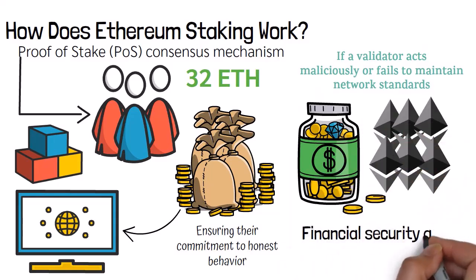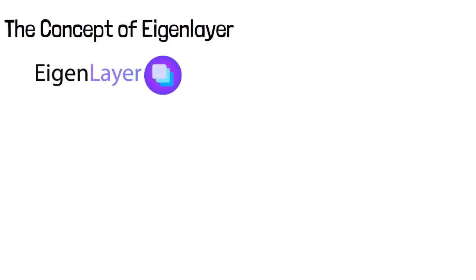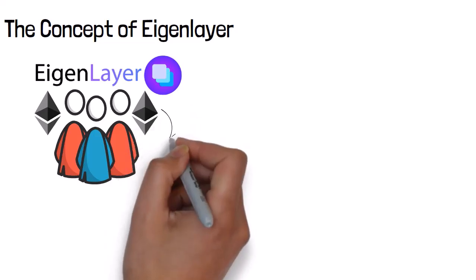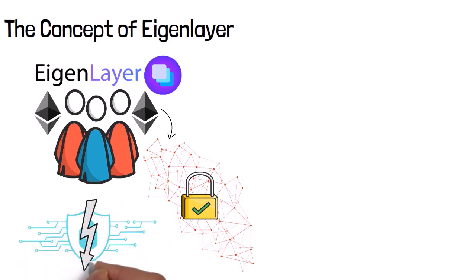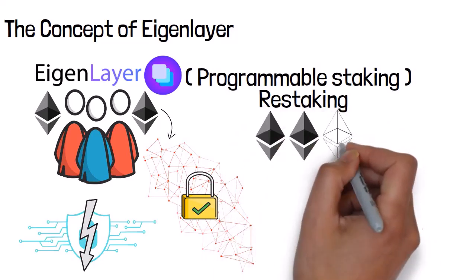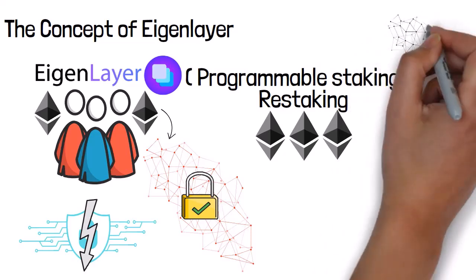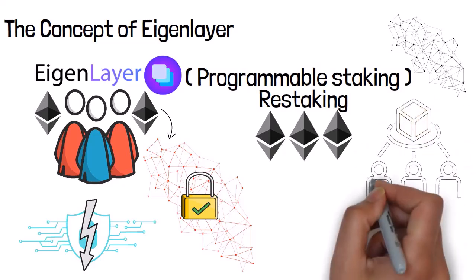EigenLayer introduces an innovative concept by leveraging existing Ethereum validators to provide additional security to other blockchain networks and decentralized services, utilizing the infrastructure and financial stakes that validators already maintain. A key feature of EigenLayer is programmable staking, often misunderstood as simply restaking. While restaking implies reusing staked assets, programmable staking involves a more sophisticated approach where validators can programmatically allocate their staking power to various networks and services, enabling a flexible and dynamic security model.